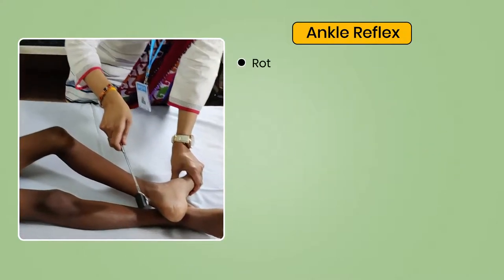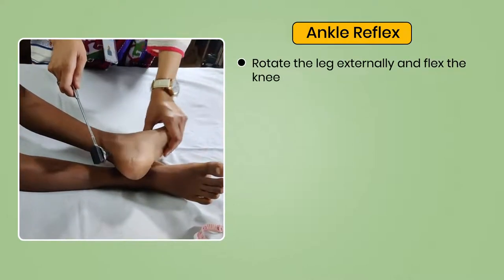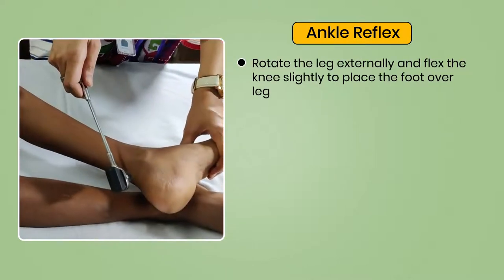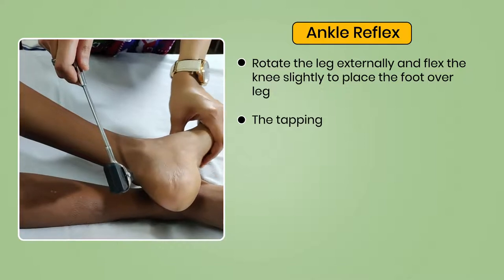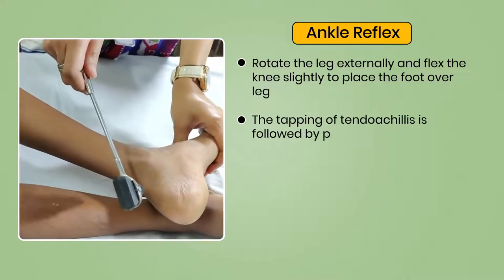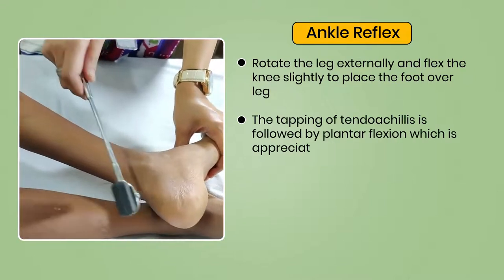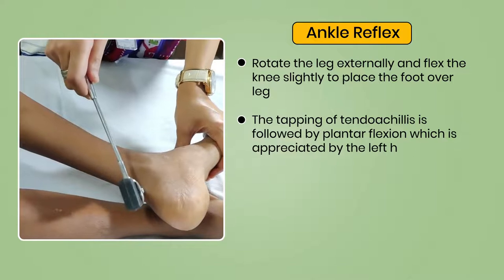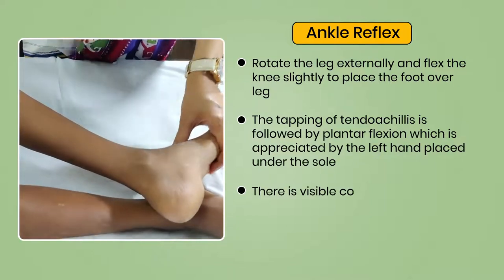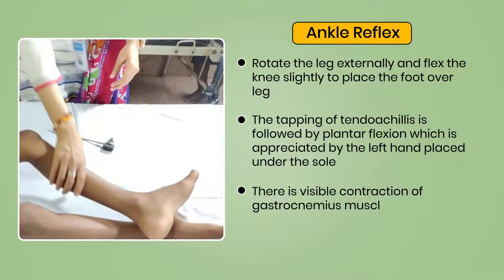For the ankle reflex, rotate the leg externally and flex the knee slightly to place the foot over the leg. Tapping of the Achilles tendon is followed by plantar flexion, which is appreciated by the left hand placed under the sole. There is visible contraction of the gastrocnemius muscle.